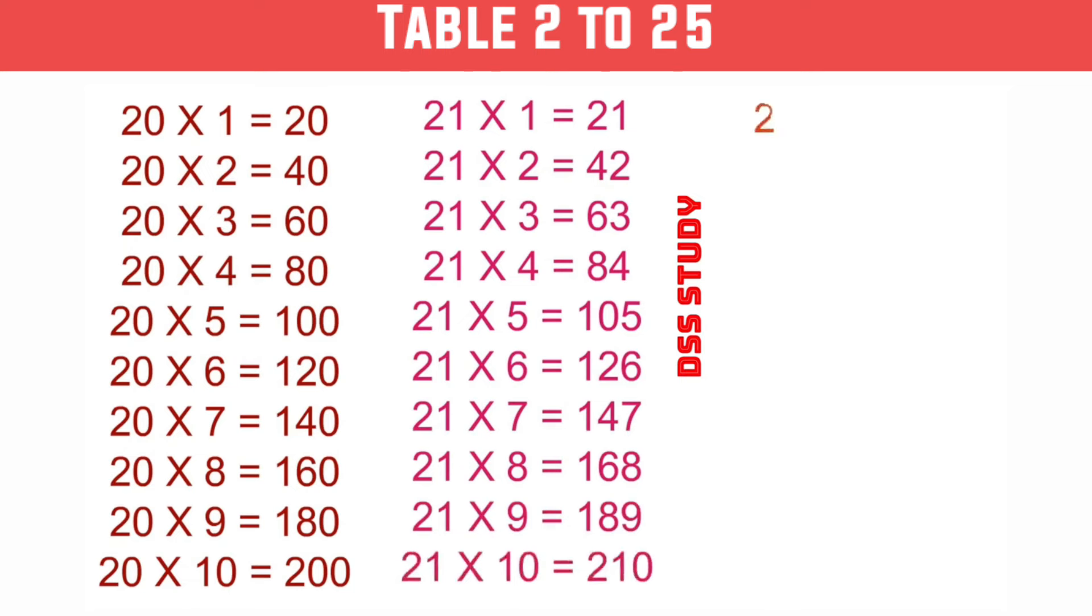22×1 is 22, 22×2 is 44, 22×3 is 66, 22×4 is 88, 22×5 is 110.